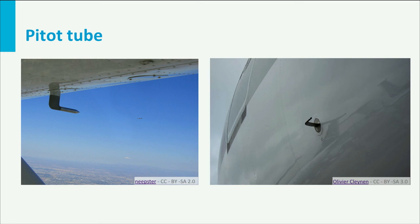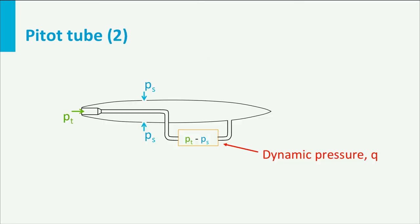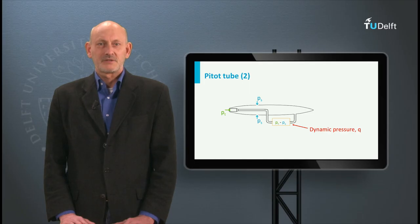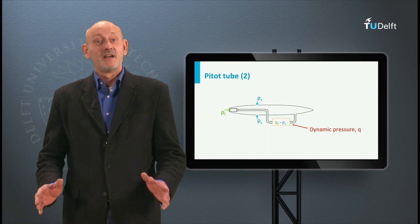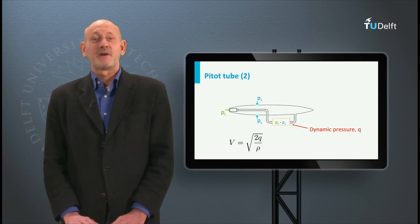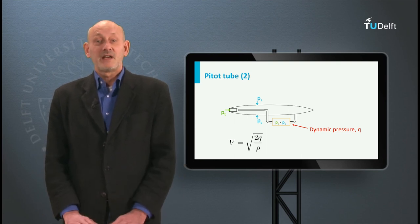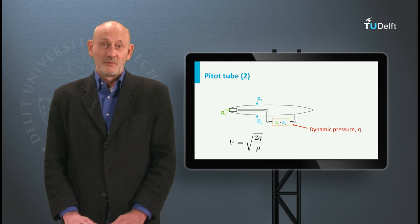Here you see pitot tubes installed on an aircraft. In many cases these two are combined in one instrument: a pitot-static tube or Prandtl tube. Such an instrument measures the dynamic pressure directly, from which we can derive the flight speed with v = √(2q/ρ).